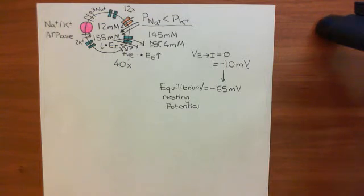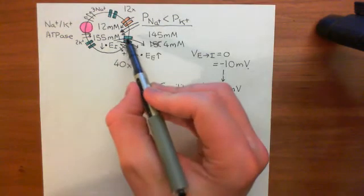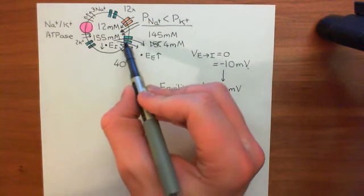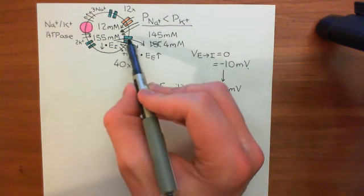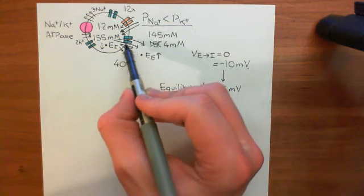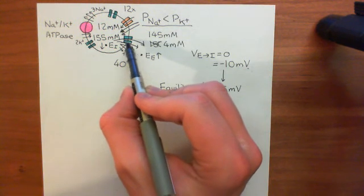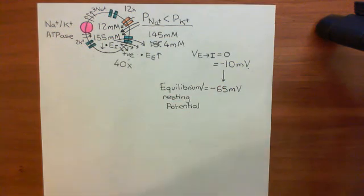The sodium-potassium ATPase maintains the concentration gradients of ions across the cell membrane. It's not terribly involved in the build-up of the electrical potential difference itself. In the next video, we're going to look at the structure of these two-pore domain potassium channels — the leaky potassium channels responsible for building up the electrical potential difference — in more detail, as they are open all the time.